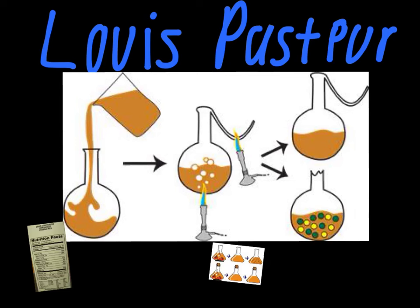Finally, to finish the experiment, he broke the curved portion off of the flask and let it sit in his lab for a few days. After only a few days, he had all kinds of life teeming inside the broth. After sitting there for a year with nothing — with the curved portion on — after just a few days with it removed, microorganisms had been falling in from the air around it and starting to grow. They thrived because not only was it a wet environment, but there were nutrients in the broth that they needed.